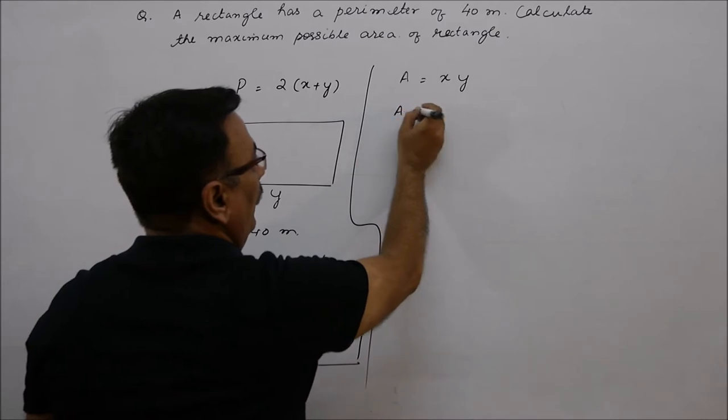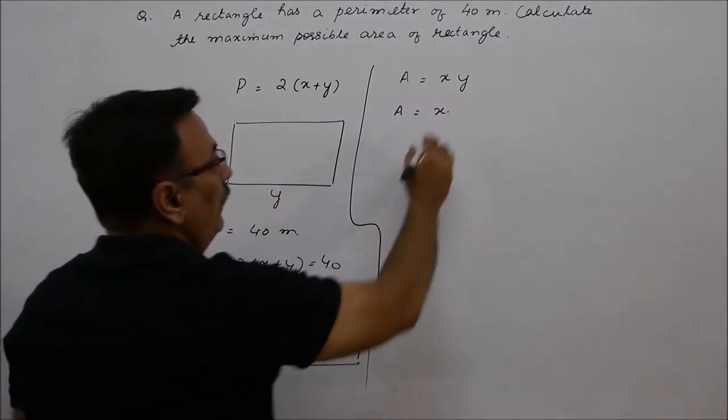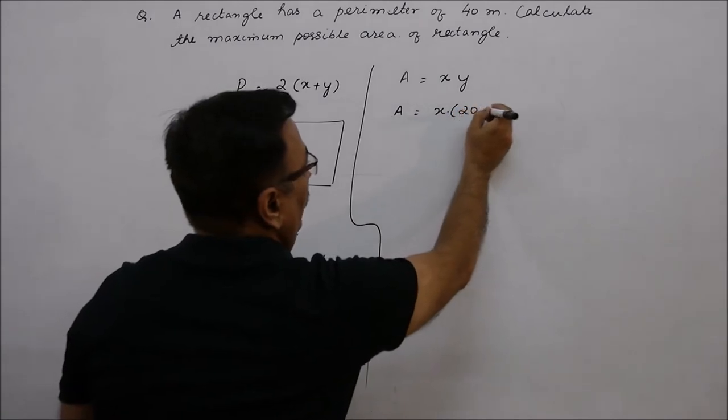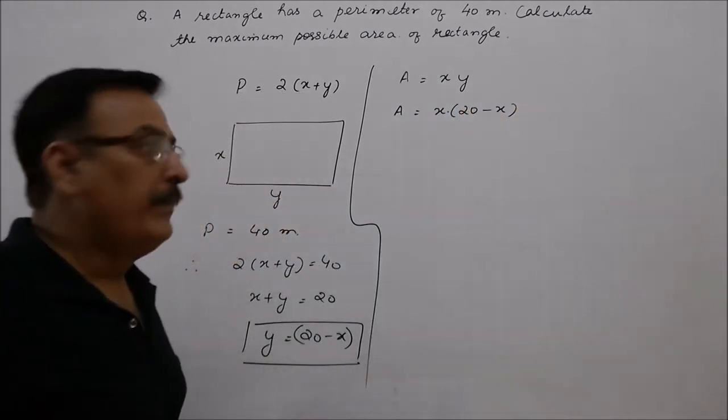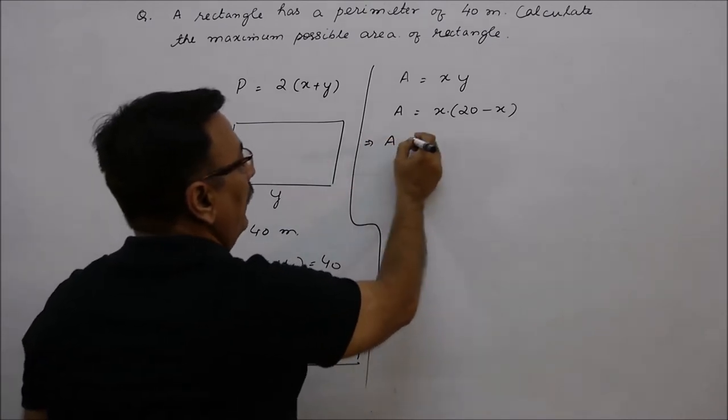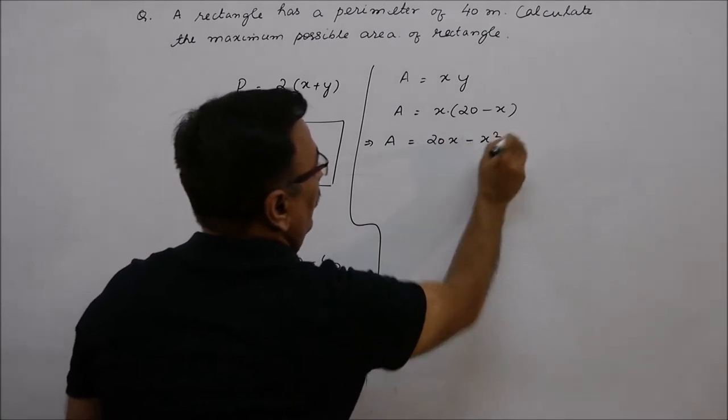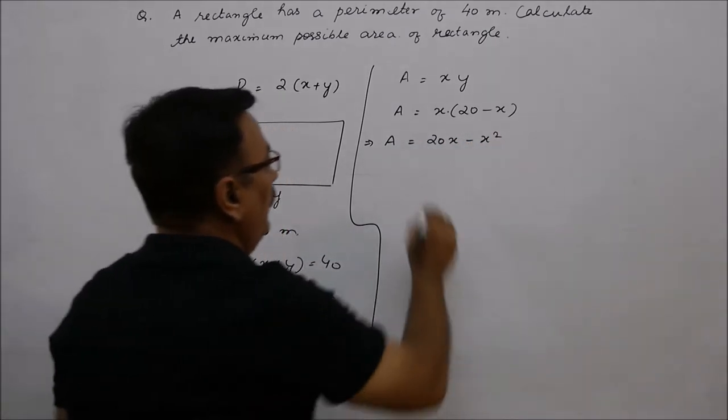So, here we have the area A is equal to x times y. And what is y? 20 minus x. So, the area is x times 20 minus x. After this, area can also be written as 20x minus x squared. So, this is our equation.